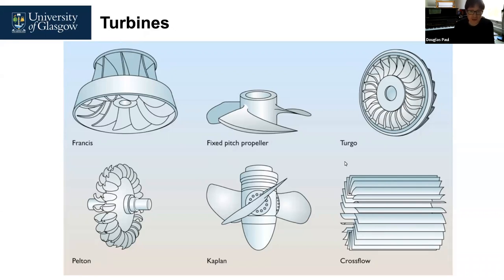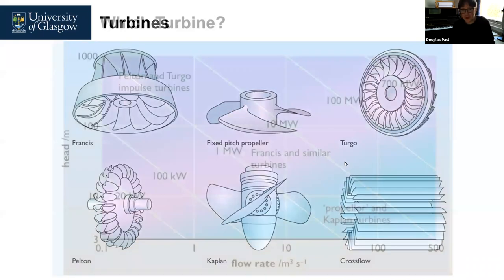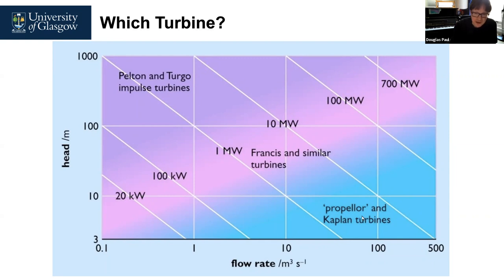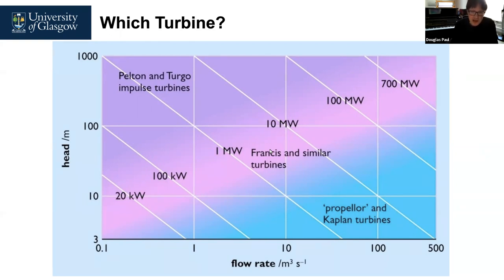There are many different turbine designs — one slide shows six examples — with many varieties used in different countries. To choose the right turbine: a high head of water calls for a Pelton or Turgo impulse turbine; a low head with very high flow rate uses a propeller-type or Kaplan turbine; and something in between uses the Francis turbine, which combines both reaction and impulse.